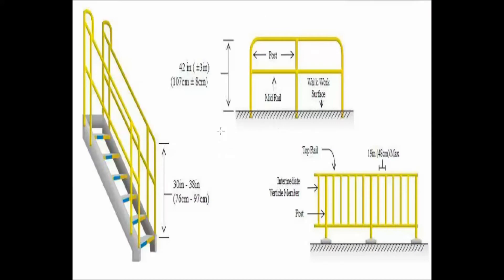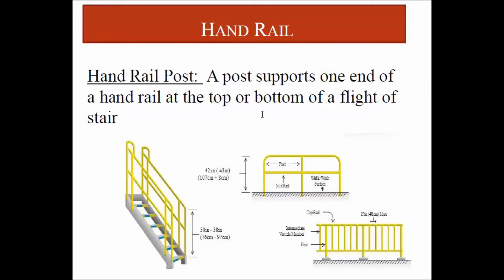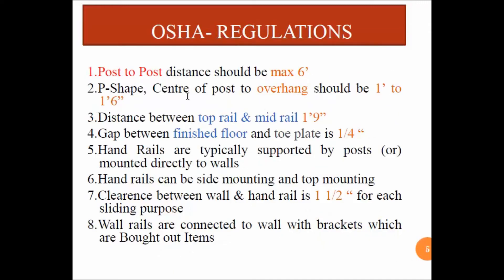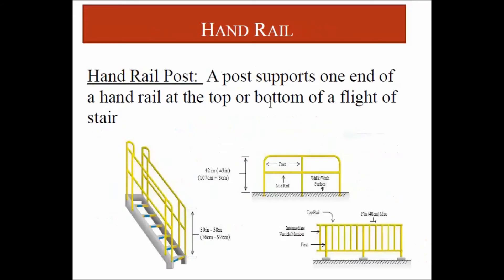This is a complete figure showing the different components of a handrail. These are the different OSHA regulations we must keep in mind. In a handrail, the post-to-post distance should be a maximum of six feet. The maximum distance between posts is limited to six feet as per OSHA regulations.